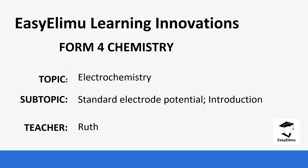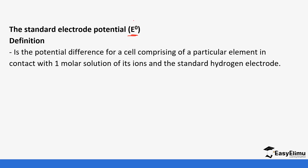Welcome to EZLM Learning Simplified. My name is Ruth and today our topic will be electrochemistry. We are going to be looking at the standard electrode potential — this is the introduction. The standard electrode potential is the potential difference of a cell comprising of a particular element in contact with one molar solution of its ion and the standard hydrogen electrode.